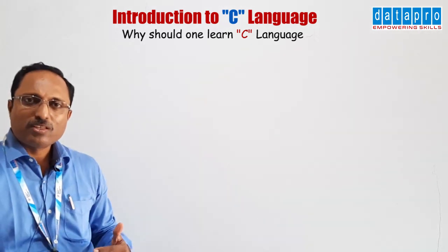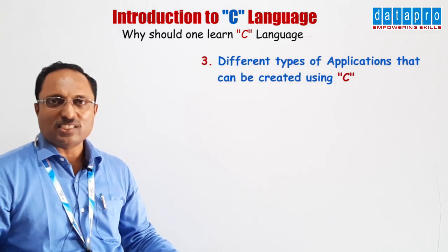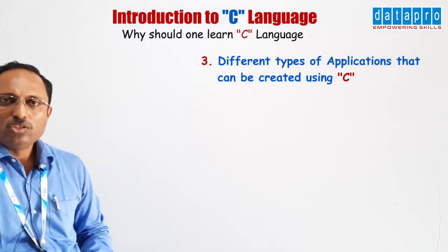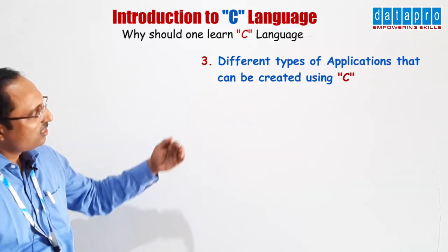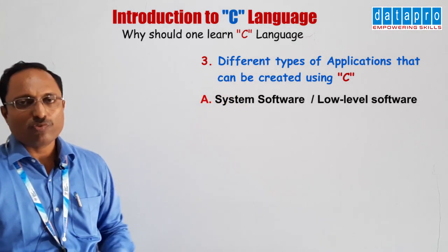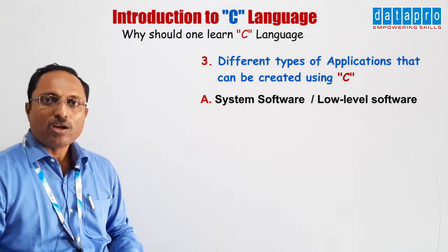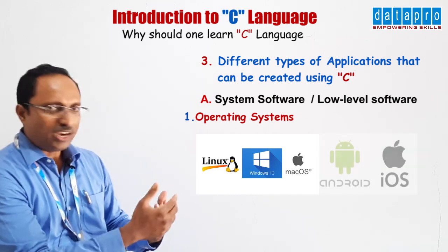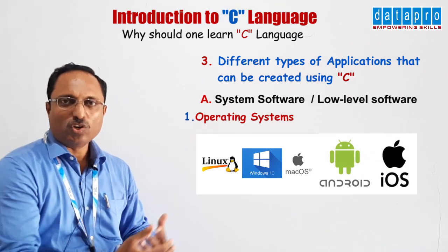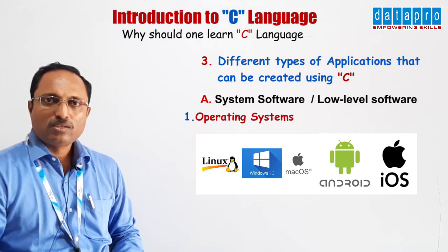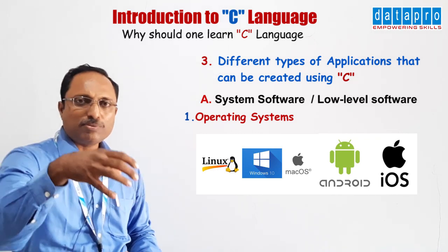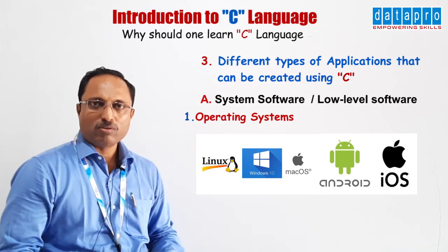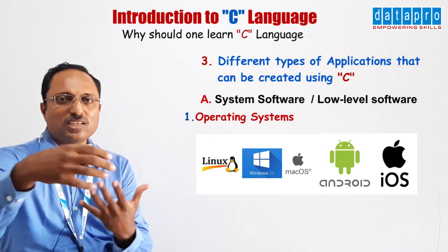Now let us see the different types of applications that can be created using C language. You can create system software or low-level software — for example, operating systems. Windows, Linux, Mac, Android, and iOS are all different operating systems. Unless an operating system is installed on a computer or mobile phone, we can't work with it. On top of the operating system, we can then install other applications.